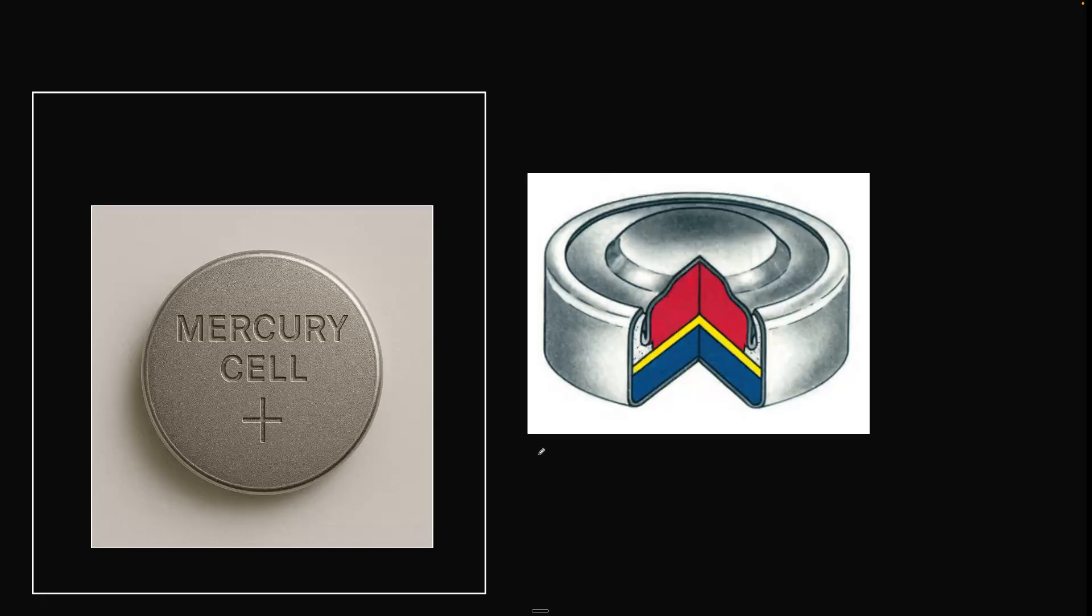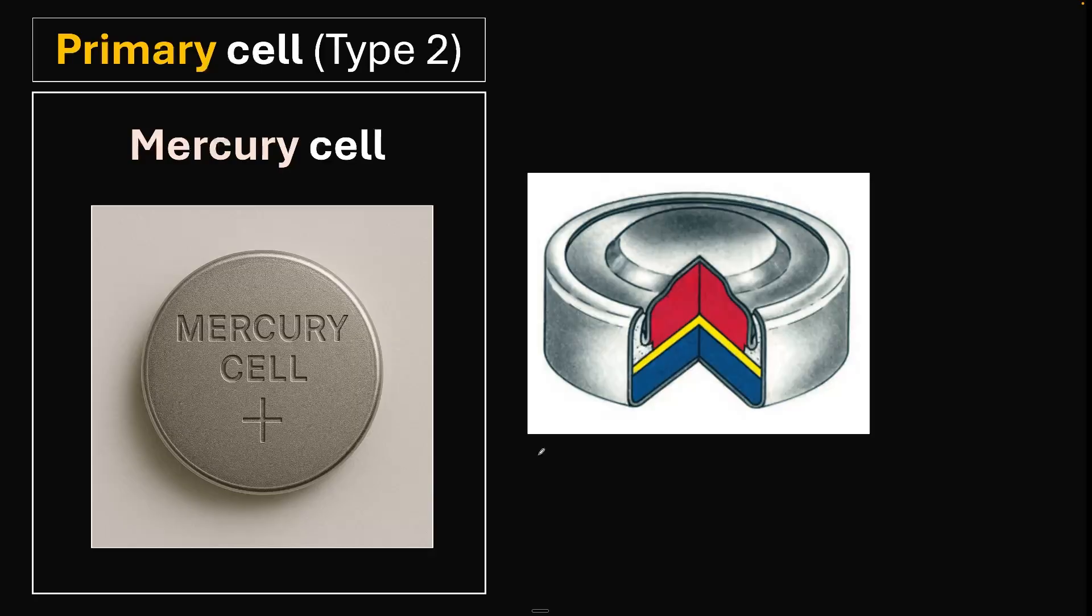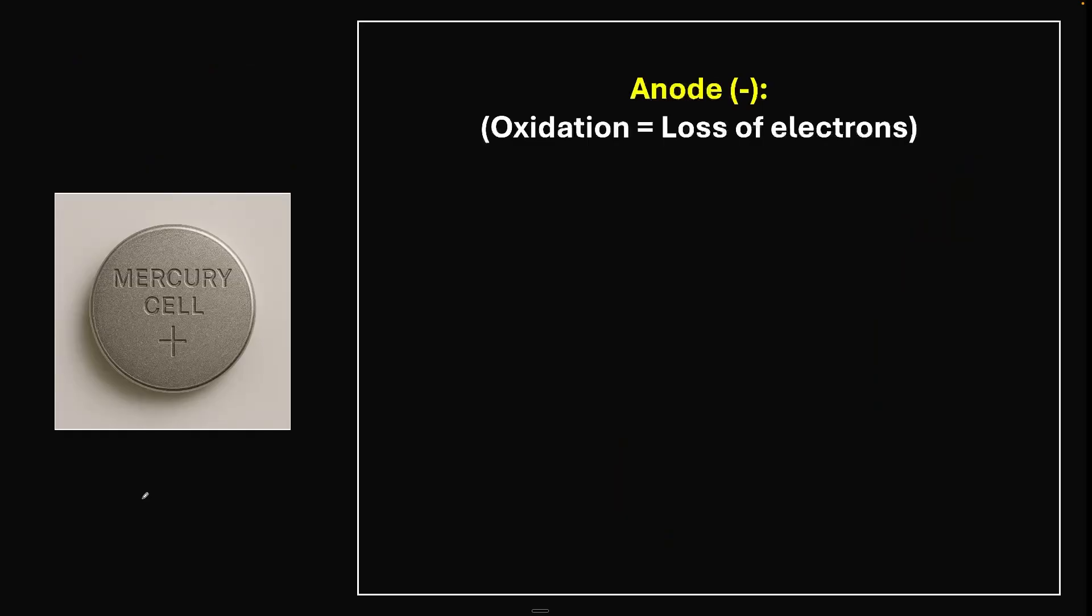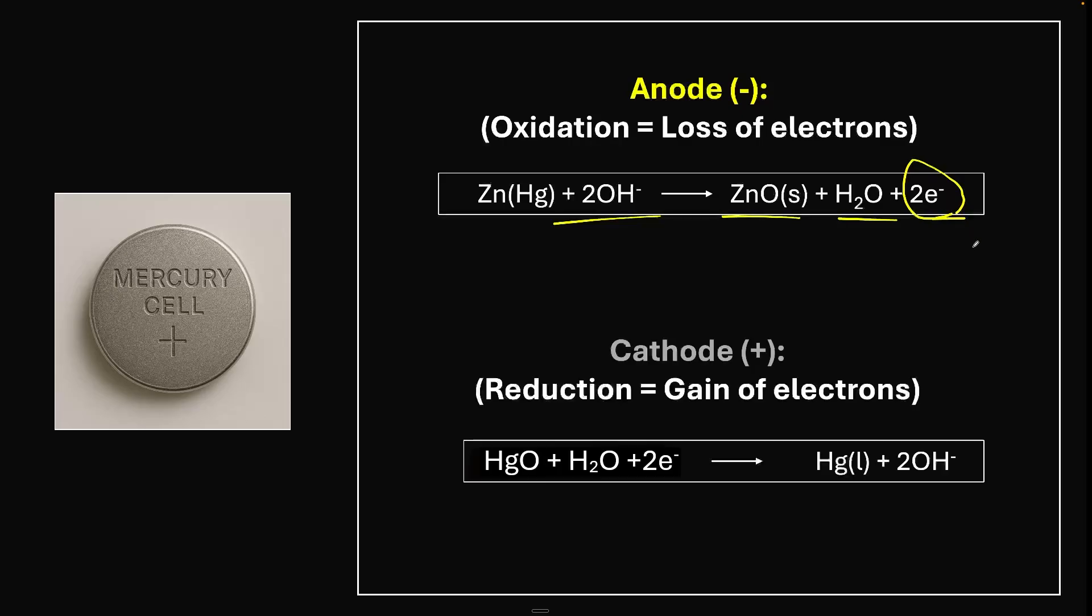This is another kind called the mercury cell. Here are the parts: anode, cathode, anode cap, cell can, separator, and gasket. At the anode: ZnHg plus 2OH⁻ gives zinc oxide plus water plus two electrons. These electrons go through the circuit. At the cathode: mercury oxide plus water plus two electrons gives mercury plus two hydroxide ions. This is the simplified version.